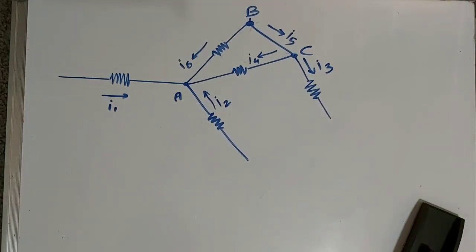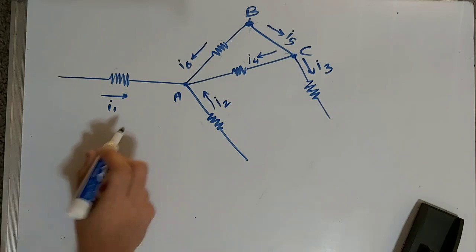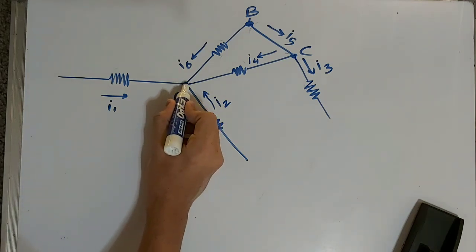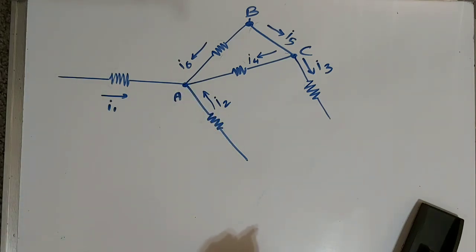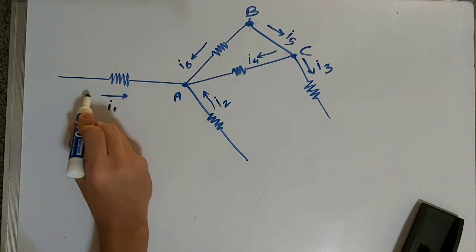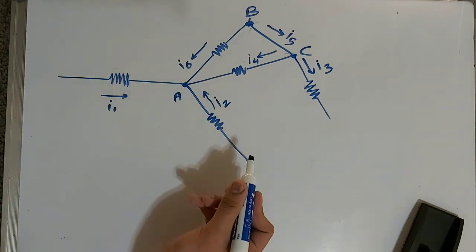Now let's try to work on a more complex example. We're in college, so a little more complex example won't hurt. Let's take junction A here. If you've watched the previous part, the current entering junction A should equal the current exiting junction A.